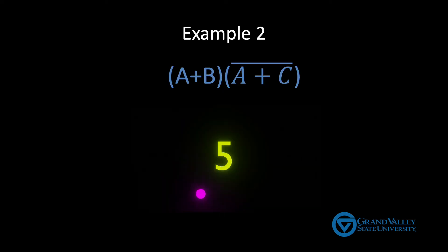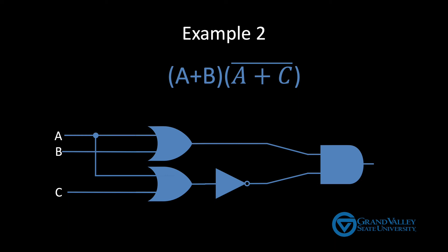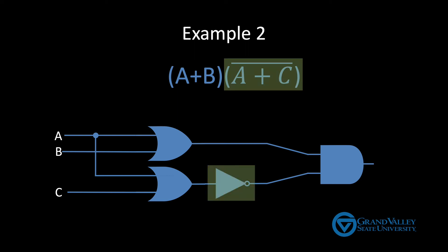Now try example two. Here's one solution. The main difference is that the entire expression in the rightmost parens is negated, hence the NOT gate after the OR gate. Note that we also could have combined the NOT gate and the OR gate into a single NOR gate.